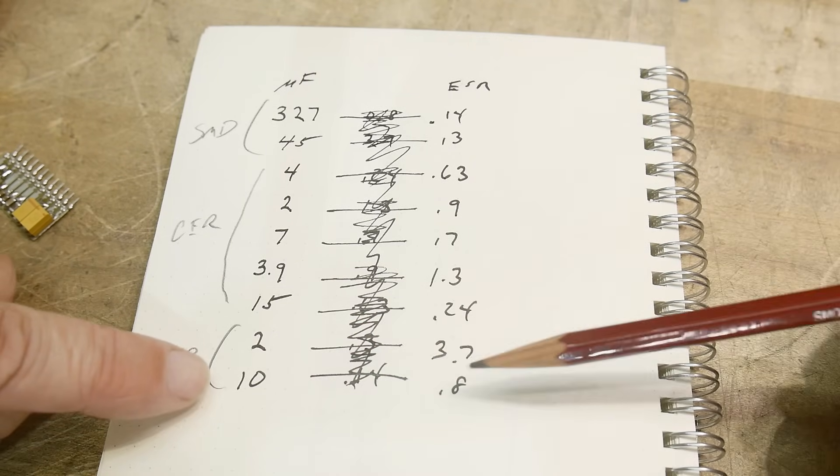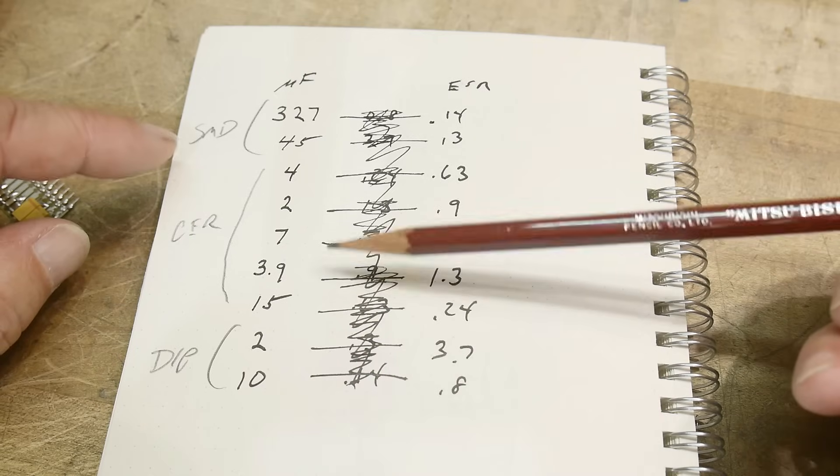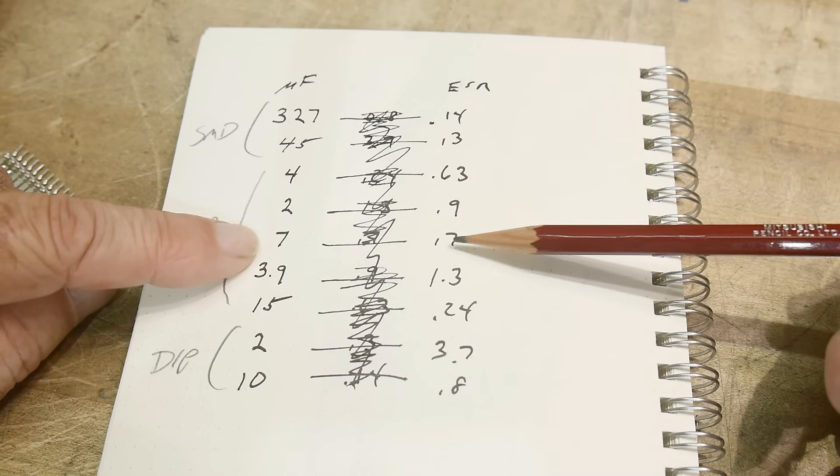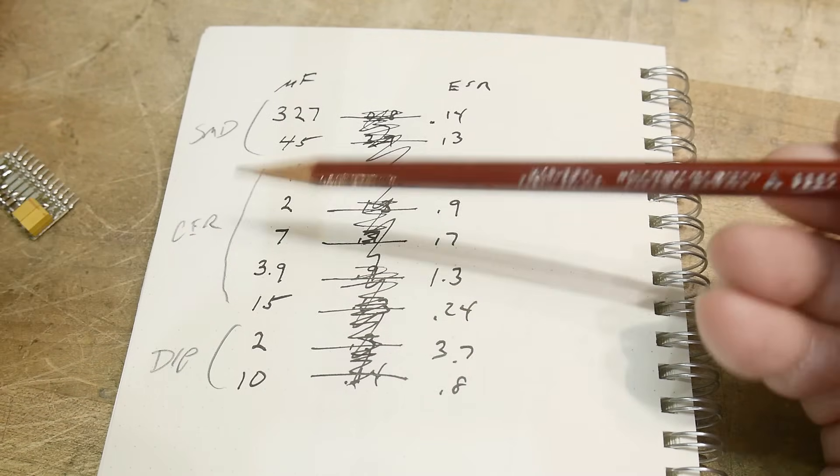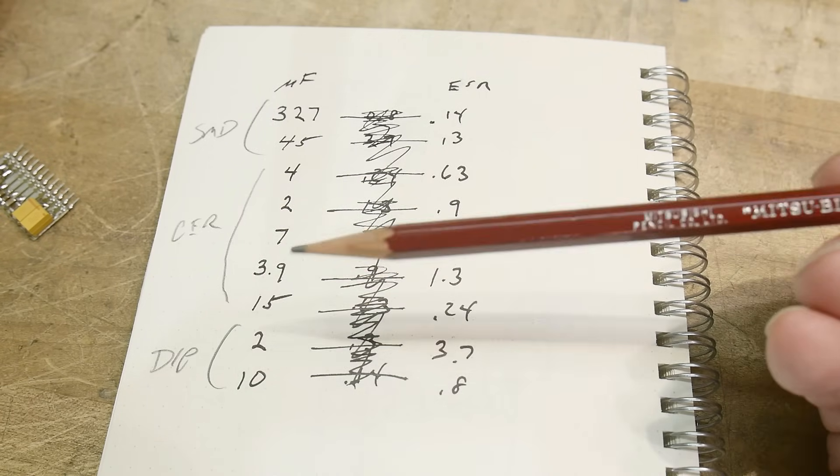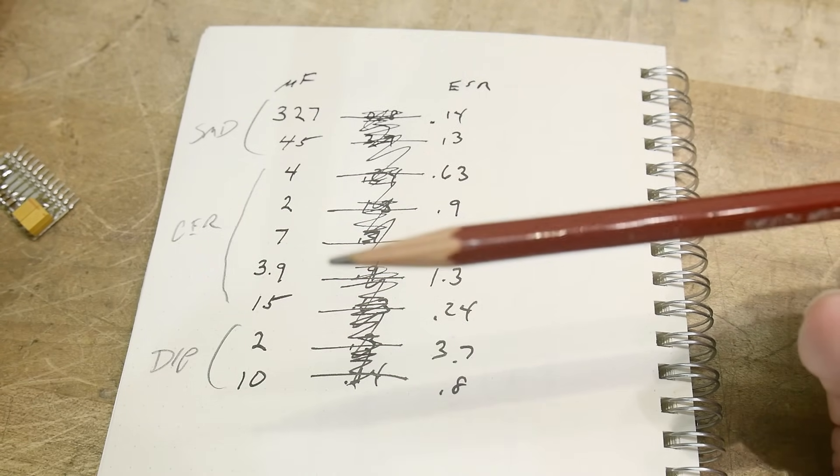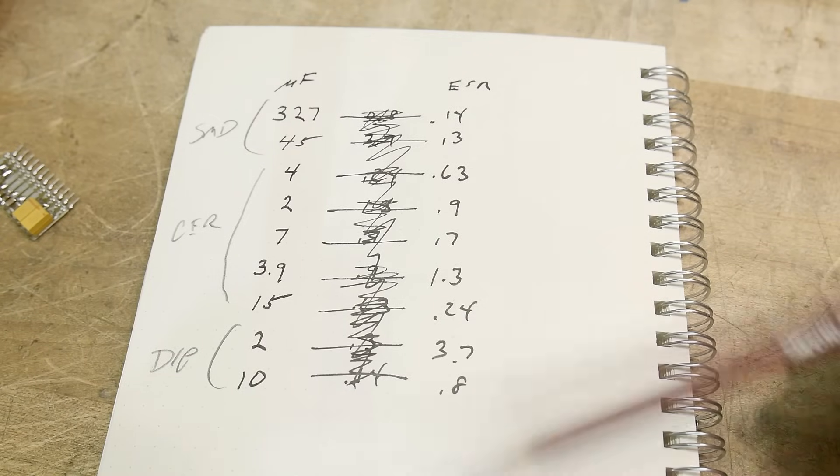And here's a 10, got us 0.8 ohms. Do we have a ceramic 10? Well, here's a 7. It's 0.7 ohms. Here's a 15. It gave us 0.24 ohms. The ceramics are going to depend on their voltage rating and the type of dielectric material that they're made out of. So yeah, these things can vary all over the map.